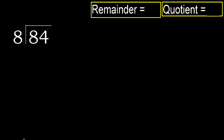84 divided by 8. 8 is not less, therefore work with 8. Here, 8 multiplied by which number is nearest to 8 but not greater? 8 multiplied by 1 is 8 — that is not greater.